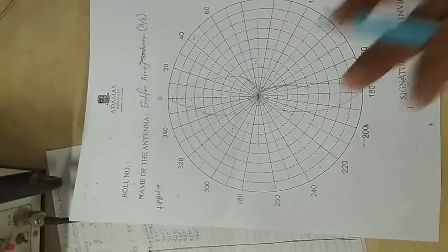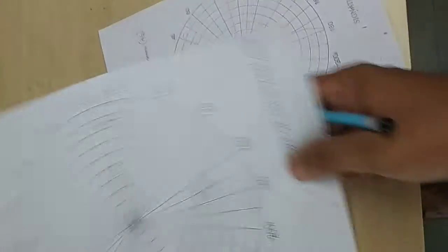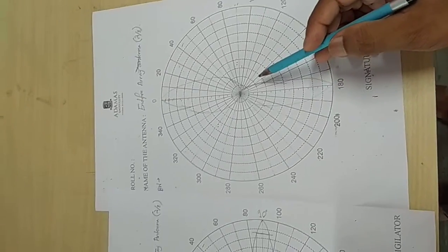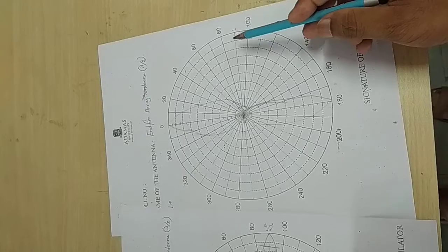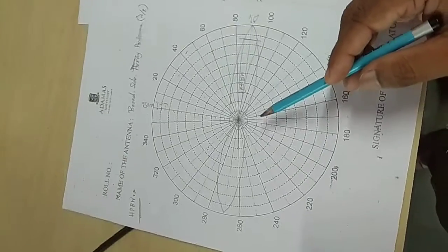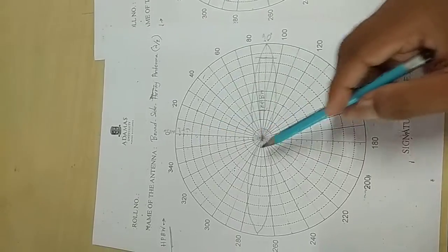We can definitely figure out the broadside array and the end fire array look like this. This is the end fire array at which 0 degrees is maximum and 90 degrees is minimum. For the broadside array, 90 degrees is maximum and 0 degrees is minimum.